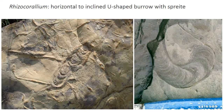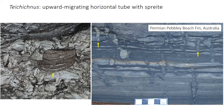Two other characteristic trace fossils in the Cruziana ichnofacies: this U-shaped burrow with spreitae — generally horizontal or slightly inclined — is called Rhizocorallium, a very common burrow in Cruziana. And Tychichnus is an upward-shifting horizontal tube that also contains spreitae. The left photo shows a lengthwise section through the burrow, and on the right the yellow arrows point to specimens of Tychichnus where we're looking at the end of the tube as it moves upward.